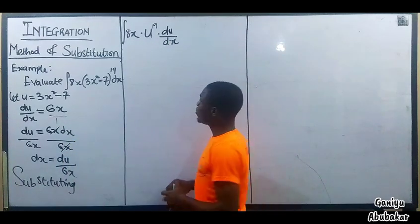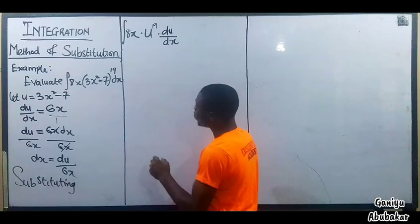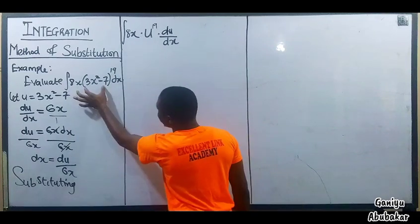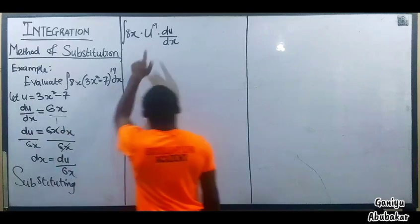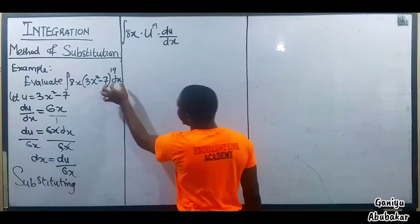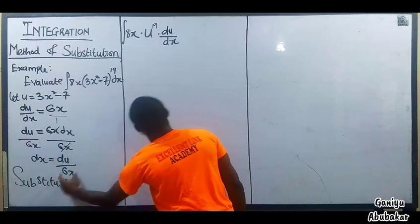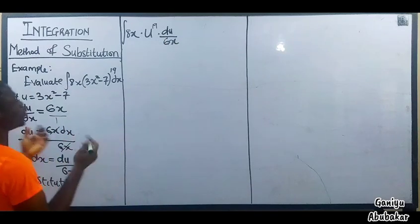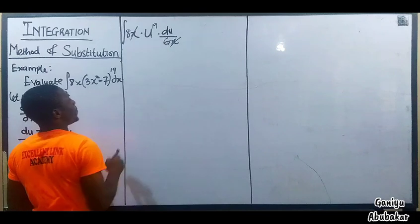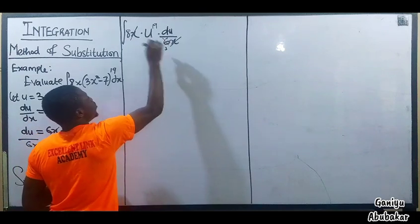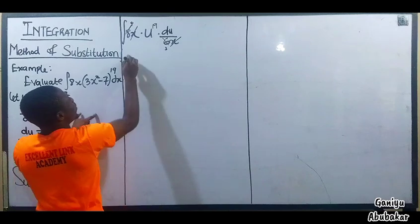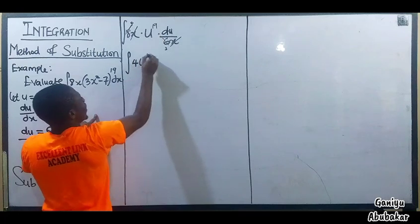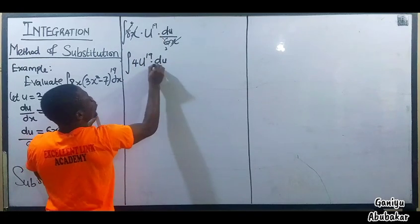Observe that at this point I have 8x times u to the power 19 times du over 6x. I can see that x cancels x. Then 8 over 6 simplifies: 2 goes into 8 four times, and 2 goes into 6 three times. Finally, I have the integral of 4 over 3 times u to the power 19 du.